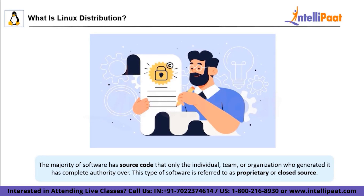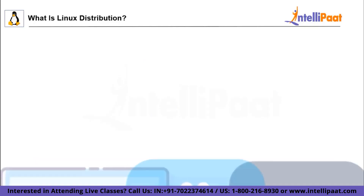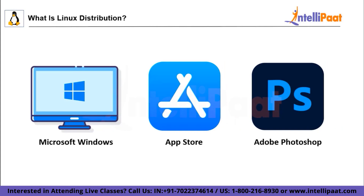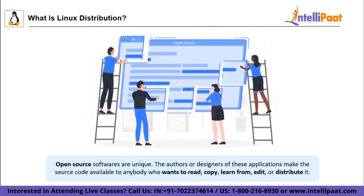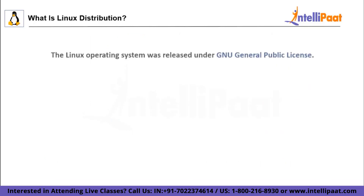In most operating systems, only the individual, team or organization who generated the source code holds complete authority over it. This type of software is referred to as proprietary or closed source software. Only the original developers of proprietary software have the legal right to copy, inspect and modify it. And in order to use it, computer users must agree that they'll not do anything the software's authors have not expressly permitted. Microsoft Windows, Apple App Store and Adobe Photoshop are examples of this proprietary software. Open source software is unique — the authors make the source code available to anybody who wants to read, copy, learn from it, or redistribute it.